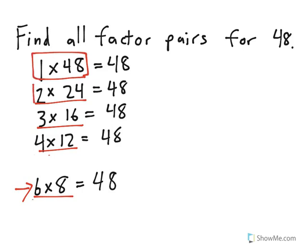1 and 48, 2 and 24, 3 and 16, 4 and 12, and 6 and 8. There are 5 factor pairs to get to the number 48.